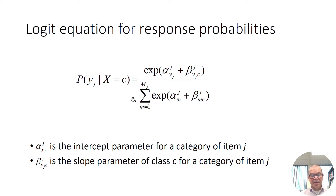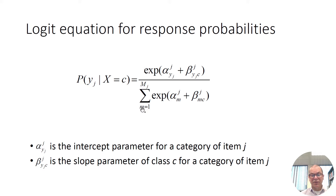In the denominator of this equation, you see the same term appearing again — an alpha plus a beta term — but now summed over all the categories of the indicator, denoted by M, summing from the first category to the upper case MJ, which is the number of categories. So the same term enters the denominator, but now summed over all categories.